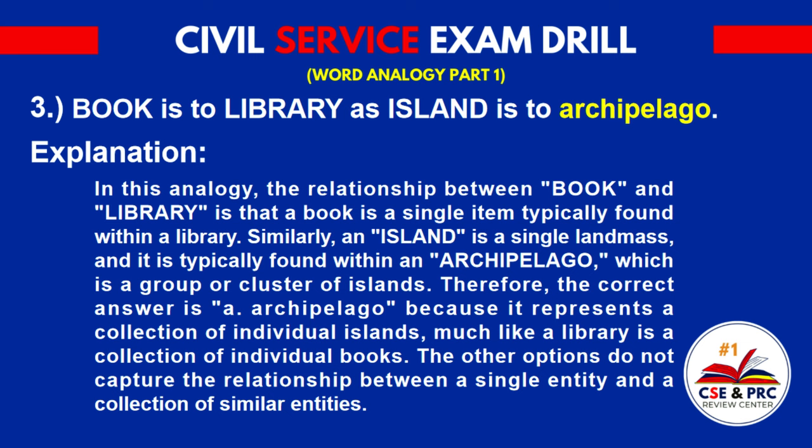Explanation: The relationship between 'book' and 'library' is that a book is a single item typically found within a library. Similarly, an island is a single landmass typically found within an archipelago, which is a group or cluster of islands. Therefore, the correct answer is A. Archipelago, because it represents a collection of individual islands, much like a library is a collection of individual books. The other options do not capture the relationship between a single entity and a collection of similar entities.